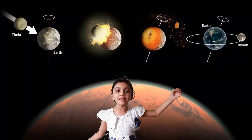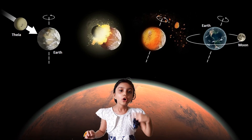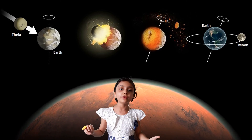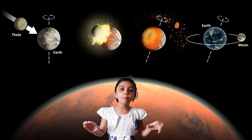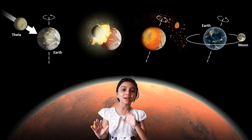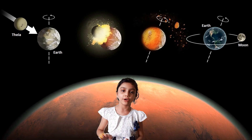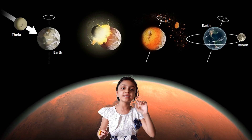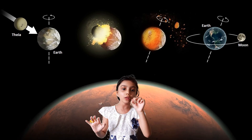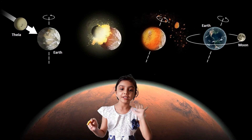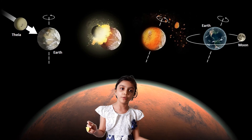During this massive collision, nearly all of young Earth and Theia melted and reformed as one large body — that is our Earth — and a small part of it spun off to become the moon.